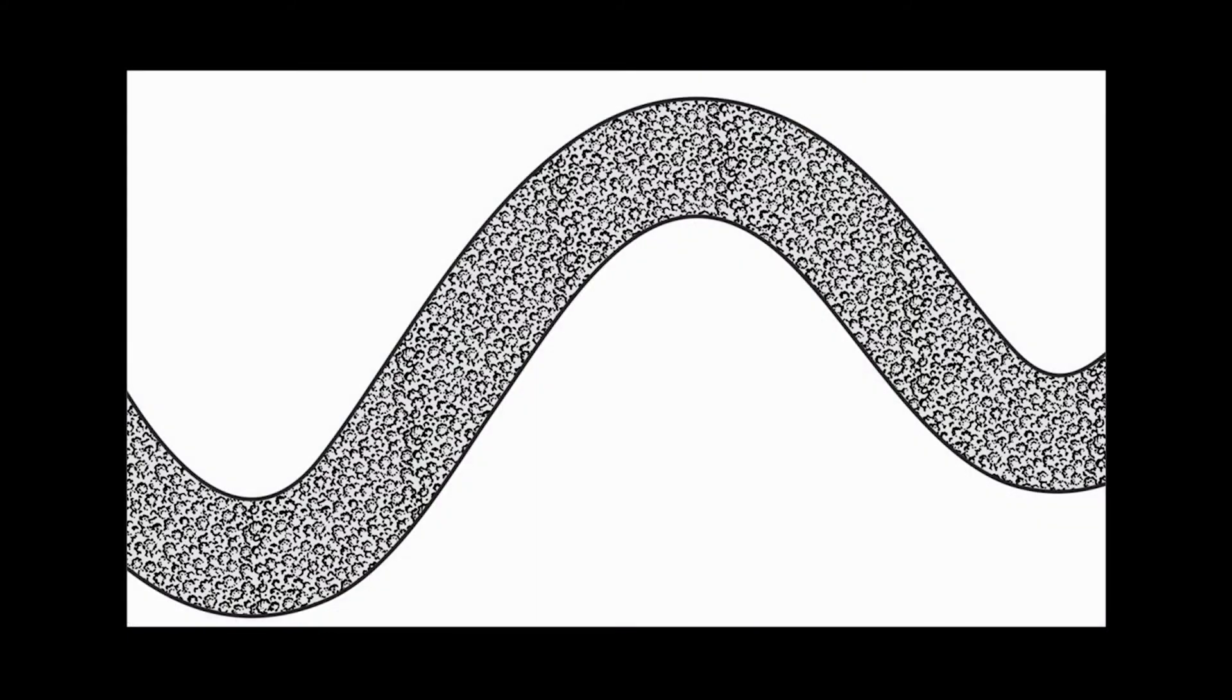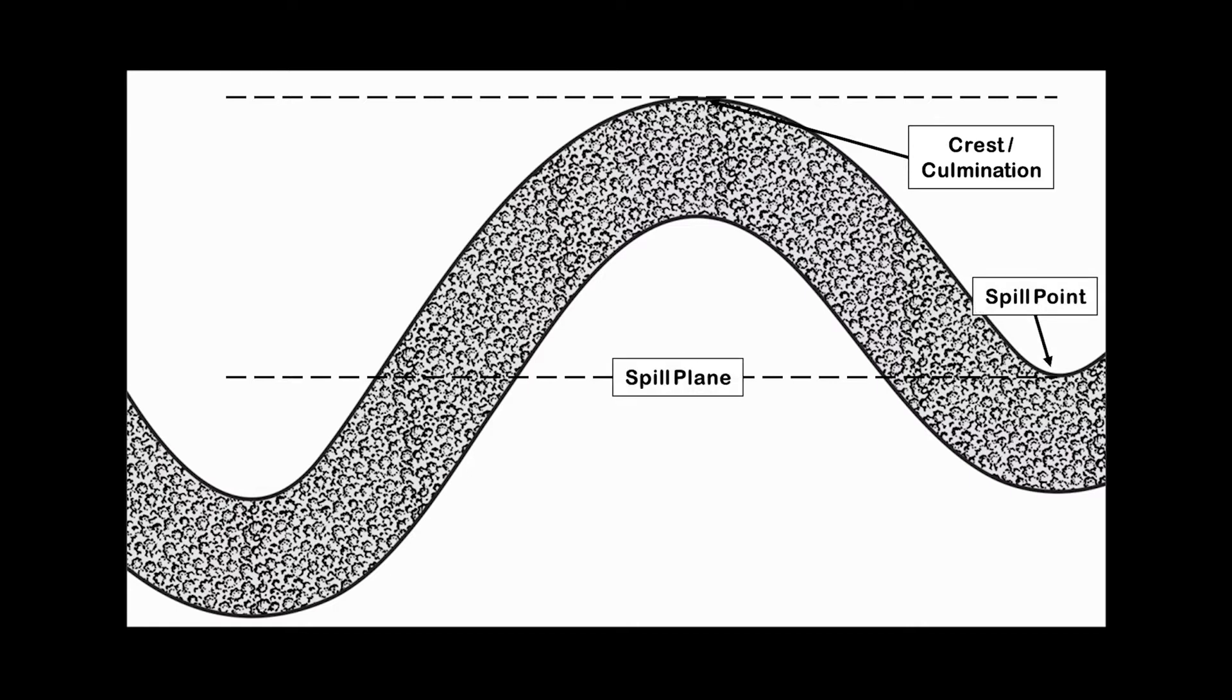We will focus on the reservoir and trap, which is an unfractured and unfaulted anticline. We start off by identifying the highest point of the trap, which is called the culmination or the crest. The lowest point is called the spill point and is associated horizontal spill plane. A trap won't necessarily be filled to this point. The closure is the distance between the crest and the spill plane.